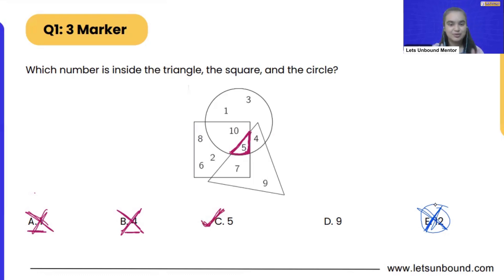Okay, but before that let's see option D as well. So number 9. Number 9 is only in triangle. That means we got the answer. Option number C is correct. Was it easy? Yes.